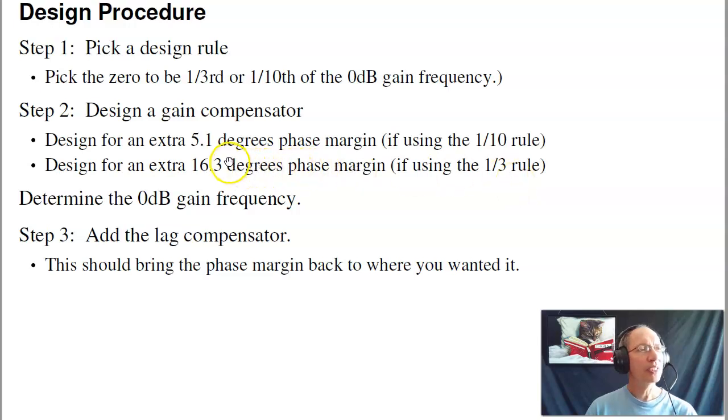The reason being is then, once you add the lag compensator, this will eat up that 5.1 degree phase margin, and I'm back with my desired phase margin, or 16 degrees, depending on what you're using. And here you kind of see the trade-off. If I use that one-tenth rule, the lag compensator will be really slow, but I get a faster system because I only have to design for an extra five degrees phase margin. If I back up on the gain even more, I'll get a slower system, but I have a faster lag compensator. So that's where you get the one-third to one-tenth kind of judgment where you put it.